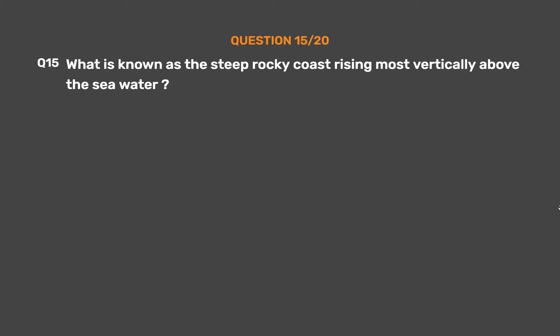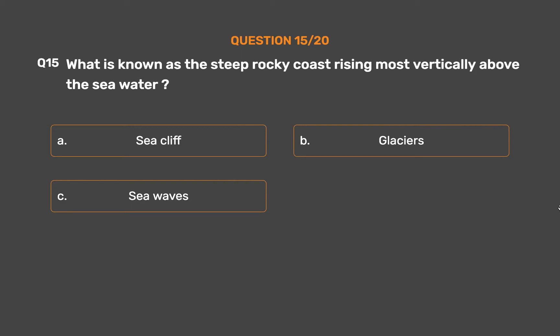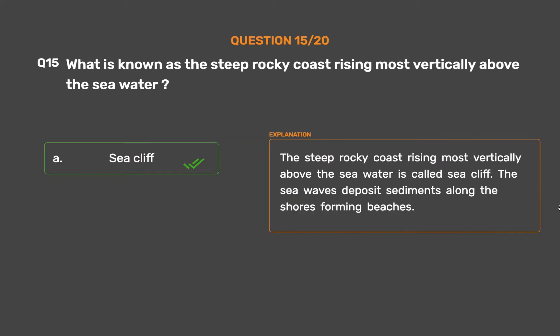Question No. 15: What is known as the steep rocky coast rising almost vertically above the seawater? Option A: Sea cliff. Option B: Glaciers. Option C: Sea waves. Option D: Stacks. The correct answer is Option A: Sea cliff. The steep rocky coast rising most vertically above the seawater is called a sea cliff. Sea waves also deposit sediments along the shores forming beaches.